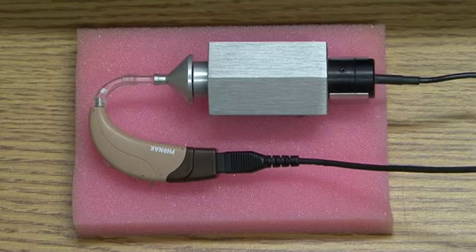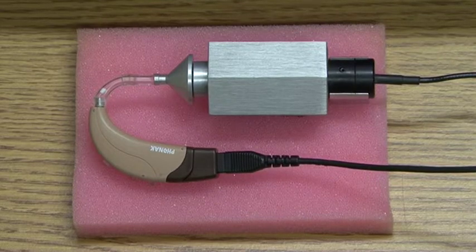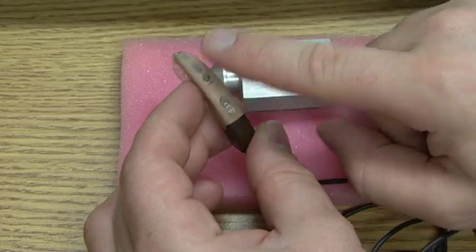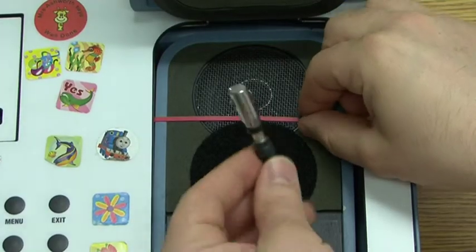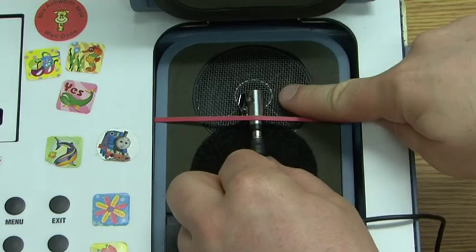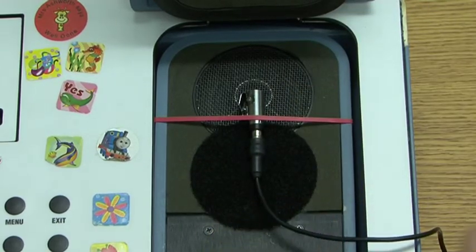Place the hearing aid and coupler carefully onto a soft surface. Ensure that the hearing aid is on the correct program. Place the lapel microphone of the transmitter onto the center circle of the loudspeaker as shown using the elastic band to help hold it in place.